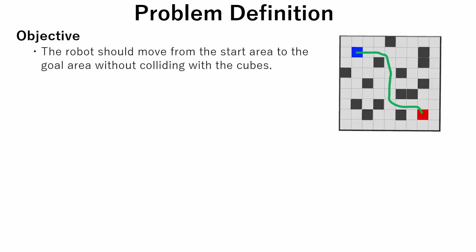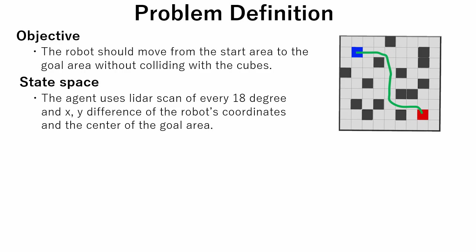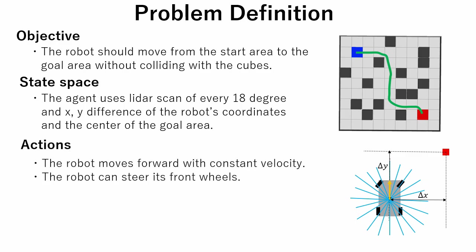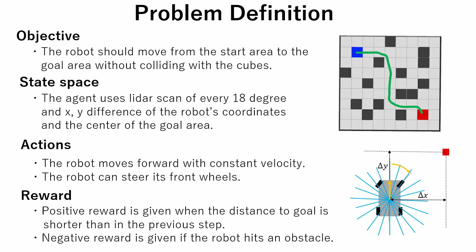The objective of this simulation is to train the robot to move from the start area to the goal area without colliding with the cubes. The agent uses a LiDAR scan of every 18 degrees and the x, y difference of the robot coordinate and center of the goal area. So state space is represented as a one-dimensional array with 22 elements. The robot moves forward with constant velocity, and the only action it can take is to steer the front wheels, so action space is a one-dimensional array with one element. The robot gets positive reward if the distance to the goal in the current step is shorter than in the previous step. Negative reward is given if the robot is closer to the cube than the threshold value, or if the robot hits a cube. If the robot hits a cube, the episode ends.